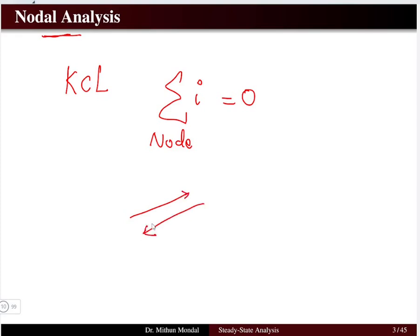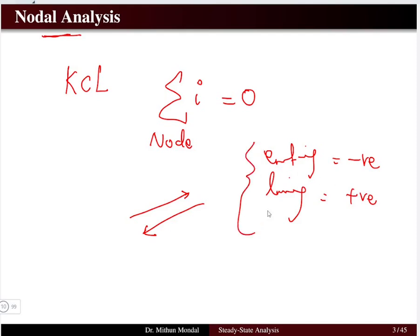Appropriate sign convention is required. You can take current entering the node as negative and current leaving as positive, or the reverse — it depends on your choice. This is the basic concept for nodal analysis, where only KCL is applicable for normal nodal problems. If the circuit has a super node problem, both KCL and KVL will be needed.